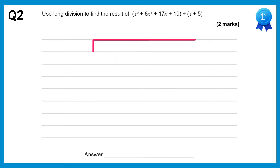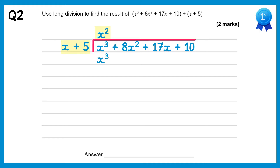For this one we'll do a bus stop, put the cubic inside and the linear term outside. We do x cubed divided by x which is x squared, then multiply x squared back through. x squared times x is x cubed, x squared times 5 is plus 5x squared. Now we subtract: x cubed take away x cubed is 0, 8x squared take 5x squared is 3x squared. Now bring down the next term, that's plus 17x.